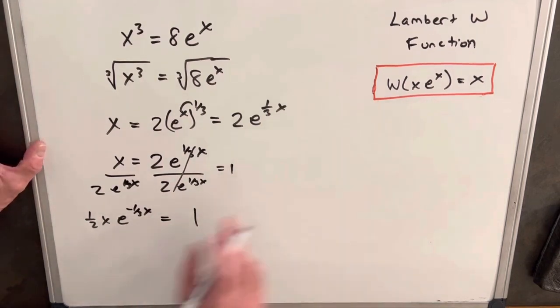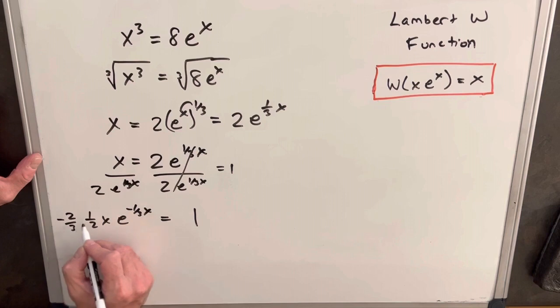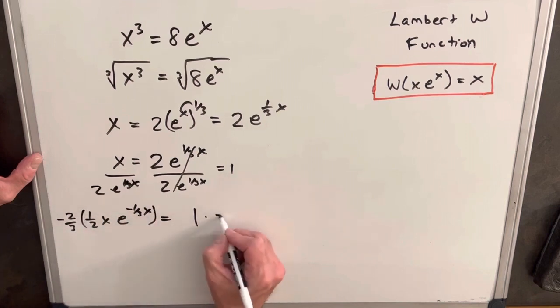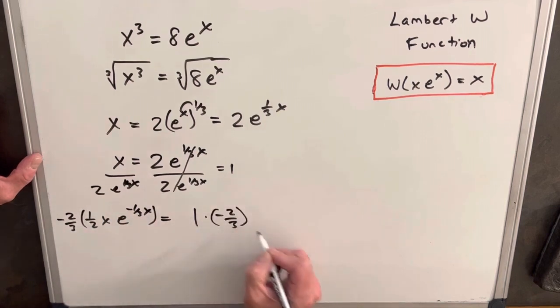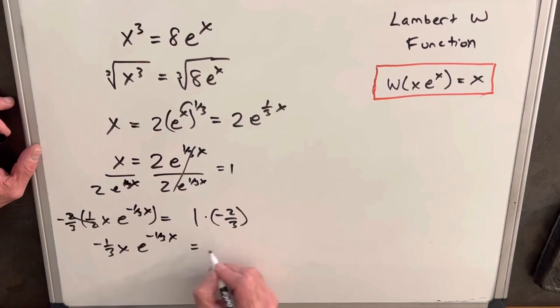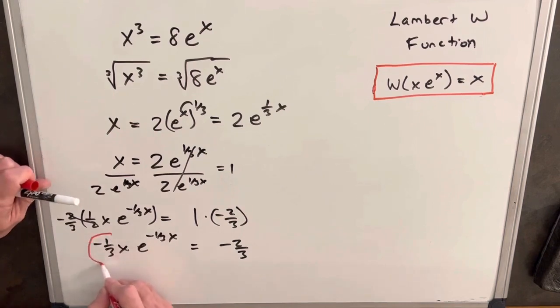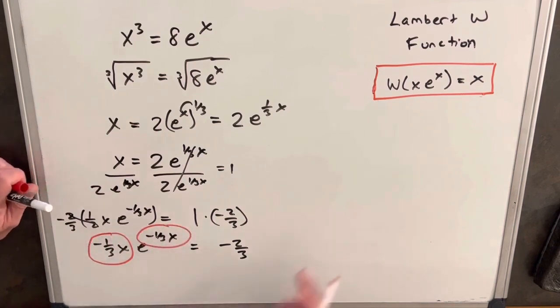We have our e and a similar input, but we need to get these to be exact. To make this work, I need to multiply by -2/3 on both sides. We're going to have -1/3 x e^(-1/3 x) = -2/3. The thing you want to notice is we've now matched the coefficient and the exponent.